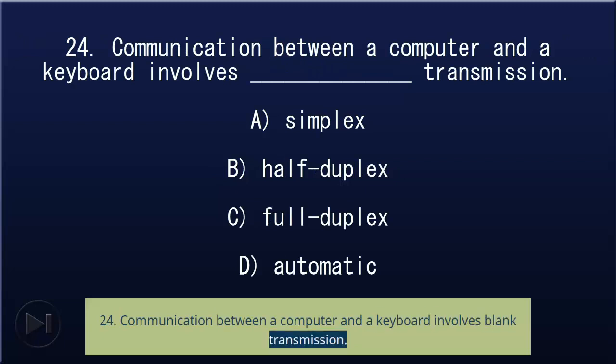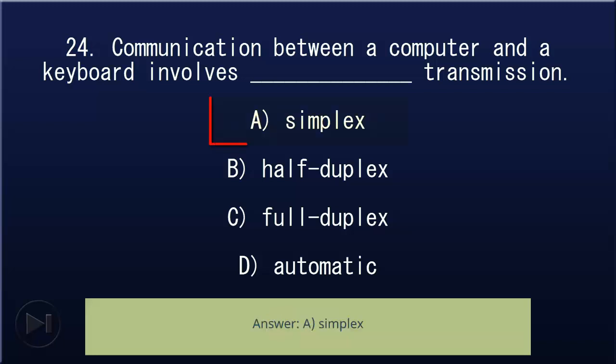24. Communication between a computer and a keyboard involves blank transmission: A) simplex, B) half-duplex, C) full-duplex, D) automatic. Answer: A, simplex.